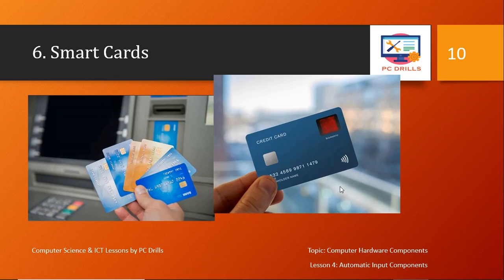Next we have smart cards. For those who withdraw money at the ATM or access secure locations, smart cards are what you mostly use. They can be of various designs — some use SIM cards, some use more modern technology. Some people use smart cards just to open doors in high-security enterprises. We use smart cards to identify and grant access, as shown in the image.